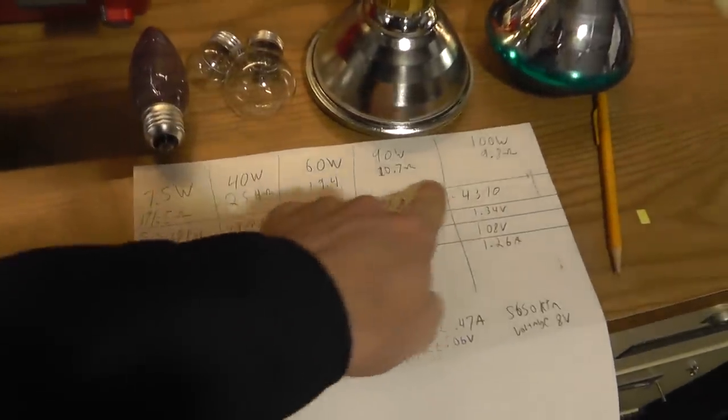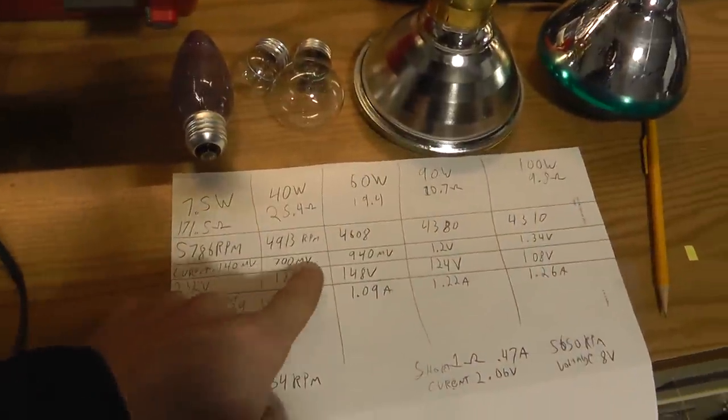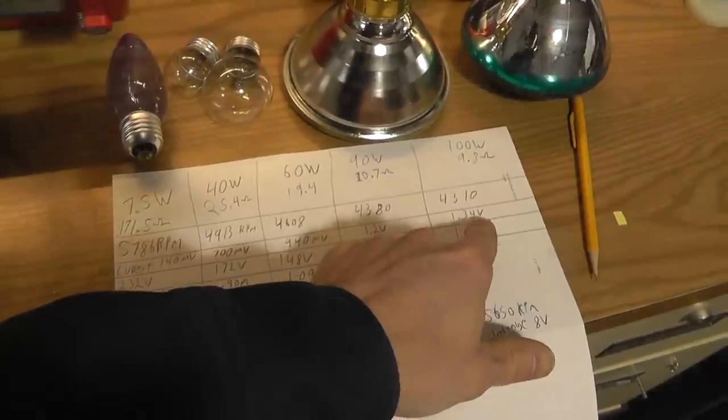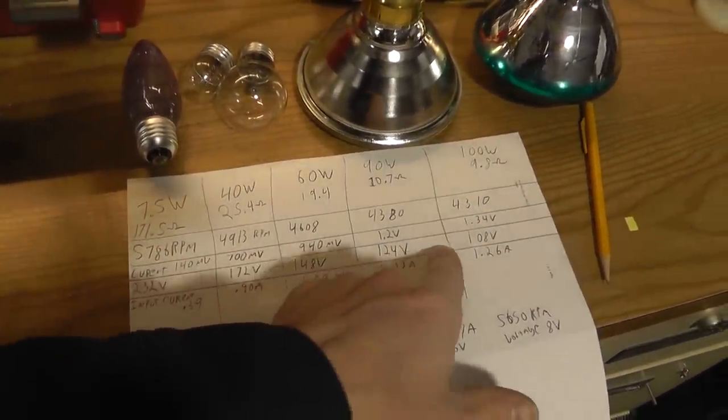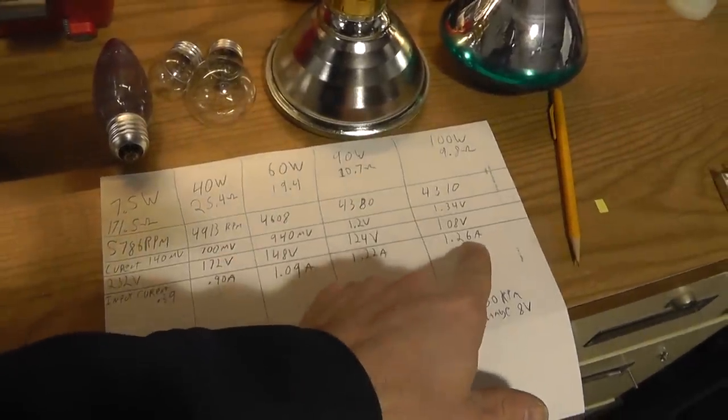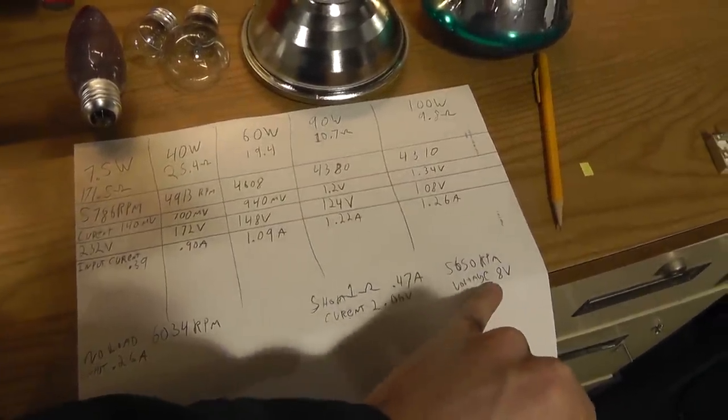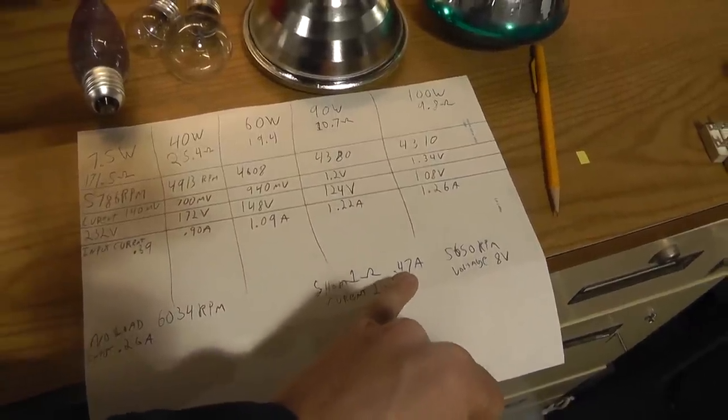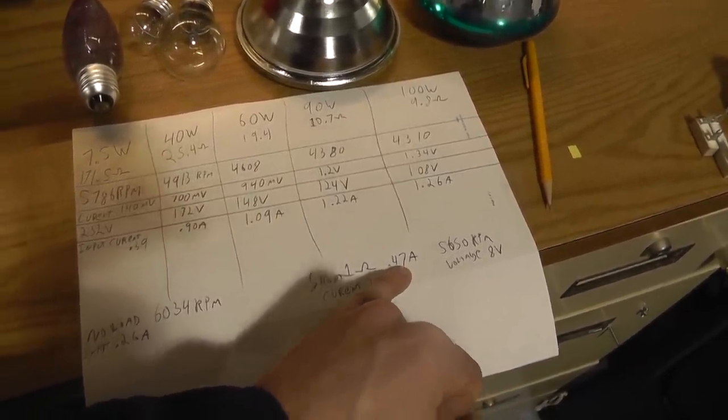So as the resistance goes down, the RPM goes down, we're pulling more current, again that's voltage representing current, the voltage across the generating coils is going down, and the input current is going up to the little motor.